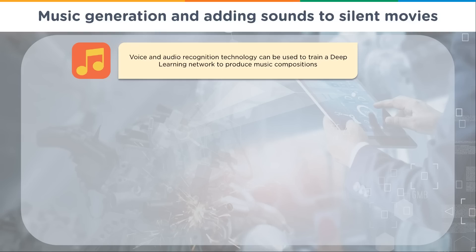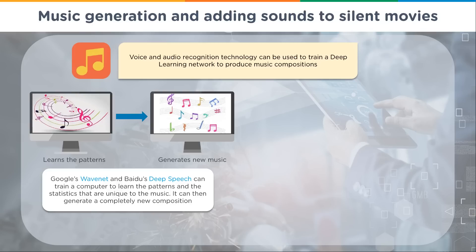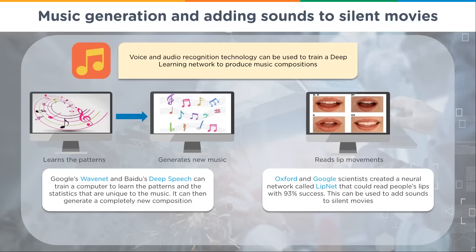Voice and audio recognition technology can be used to train deep learning networks to produce music compositions — it learns the patterns and generates new music. Google's WaveNet and Baidu's DeepSpeech can train a computer to learn the patterns and statistics unique to music, then generate a completely new composition. It's a little unsettling to think that creativity, once considered uniquely human, can now be replicated by computers too.